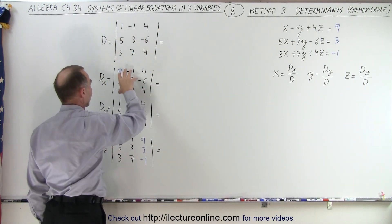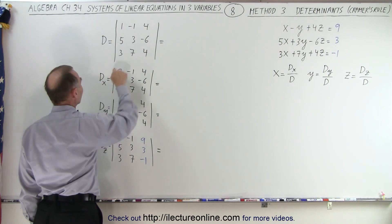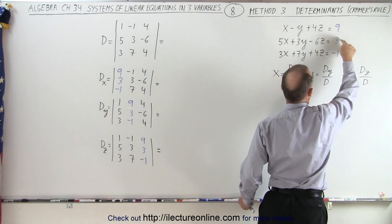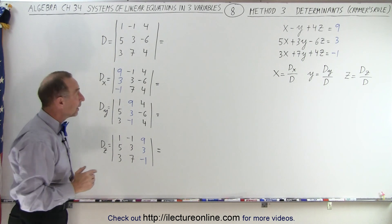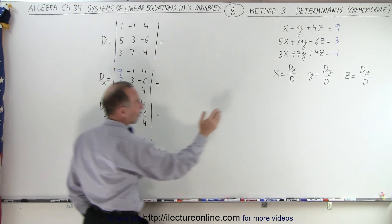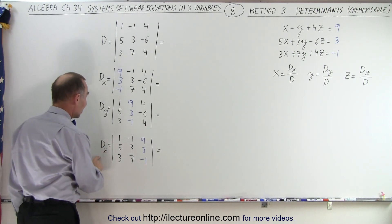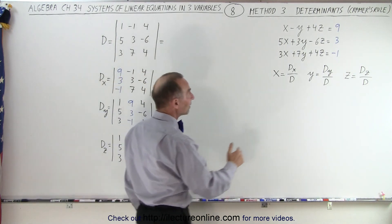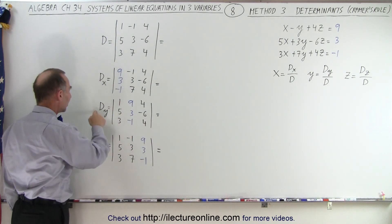Then we repeat that in those three other determinants with one exception: for D_x, instead of writing the first column as 1, 5, and 3, we're going to replace them with 9, 3, and negative 1. Then we restore those three numbers to 1, 5, and 3, and for D_y we take those same three numbers and place them in the middle column. And then for D_z, we restore the third column to its original values — negative 1, 3, and 7 — and plop the three constant numbers down in the third column. That's how we find D_x, D_y, and D_z.